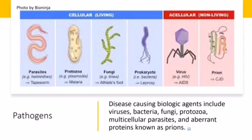Why is it important for us to know these pathogens? There are two important benefits. First, if we know the particular pathogen which caused a certain form of sickness, we can determine how this pathogen can be transmitted from one person to another or from one thing to another. By this way, we can implement measures to avoid contracting these diseases.